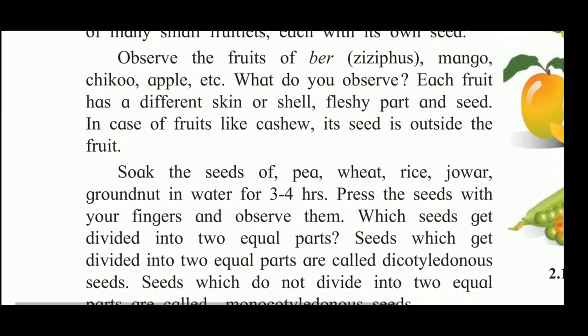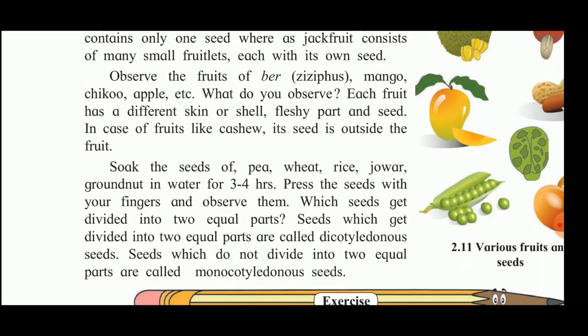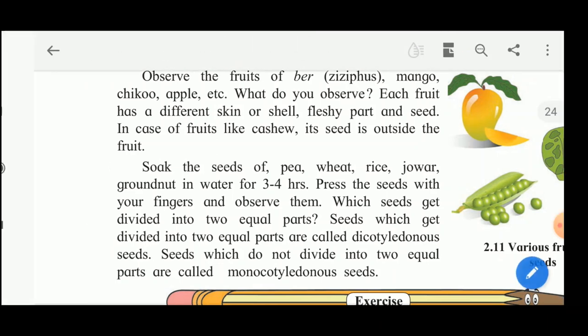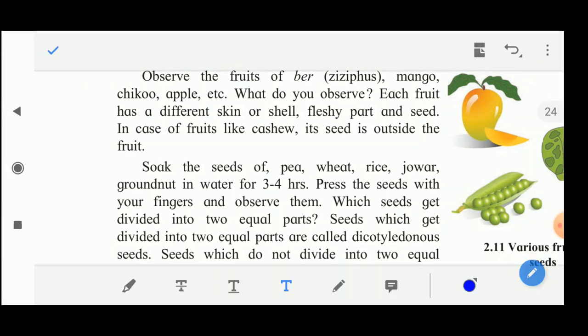Now soak the seeds of pea, wheat, rice, jowar, and groundnut in water for two to three hours and press the seeds with your fingers and observe them. The seeds which divide into two equal parts are called dicotyledonous seeds, and the seeds which do not divide into two equal parts are called monocotyledonous seeds.